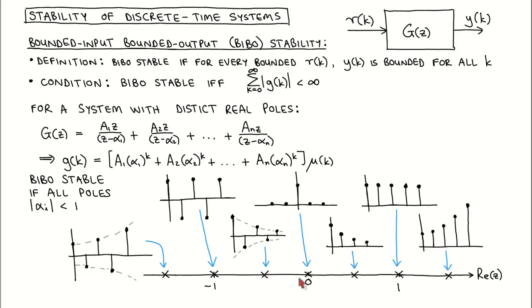If the pole is negative, then the signal will alternate between positive and negative values. Otherwise, the behavior will be the same as for positive poles: exponentially decreasing between 0 and minus 1, constant in magnitude at minus 1, and exponentially increasing for values of the pole smaller than minus 1.